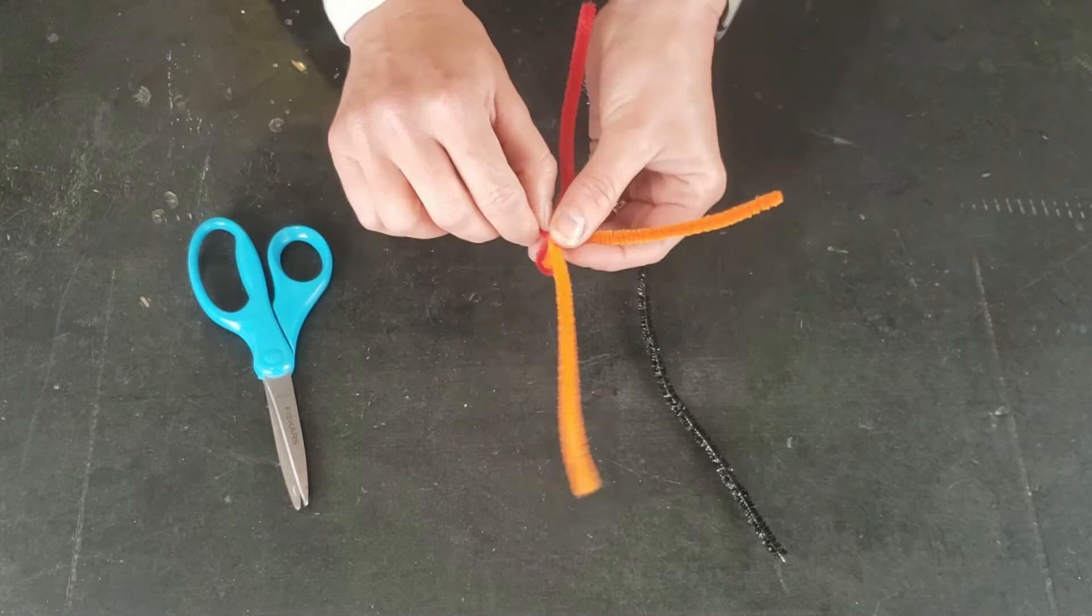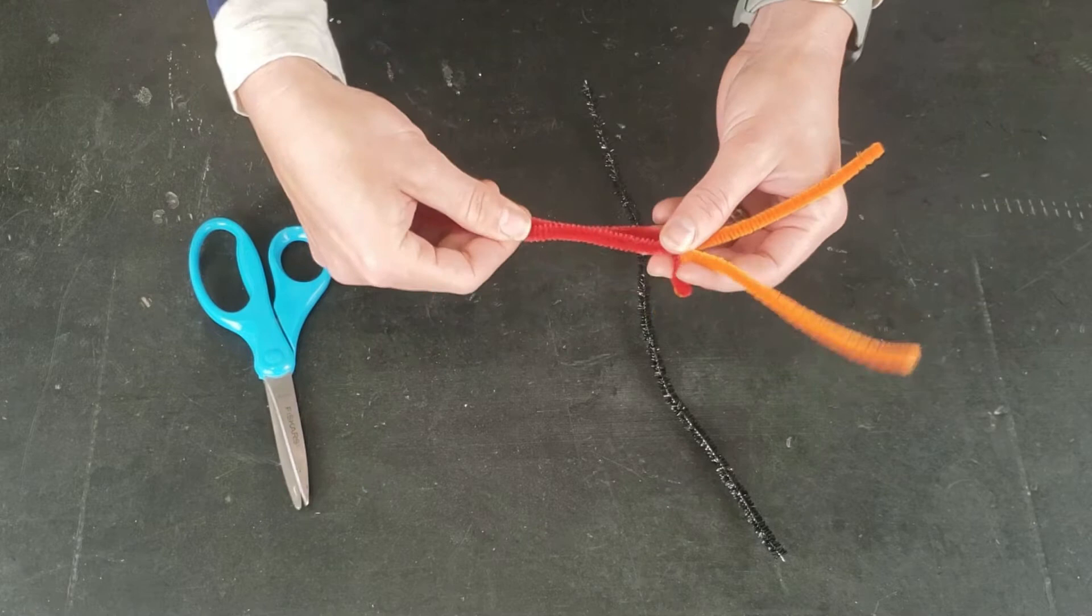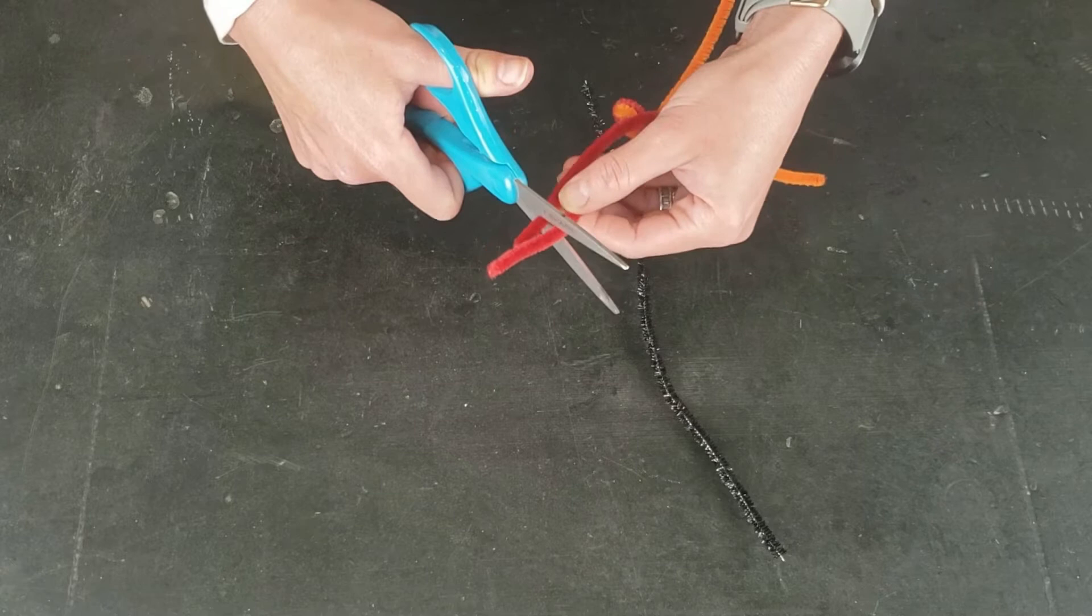And then if this is going to be your bottom piece of pipe cleaner, you want to cut a little bit off of each end. Mine didn't get that even, so at this point I'm just going to go ahead and make them even, cutting a little bit off of that one and a little bit more off of this one.